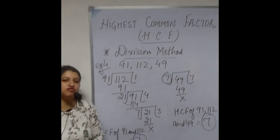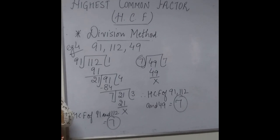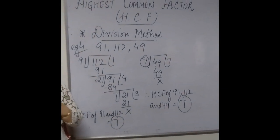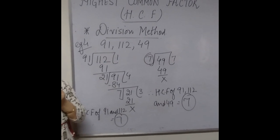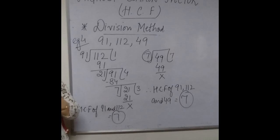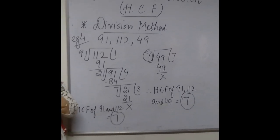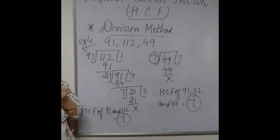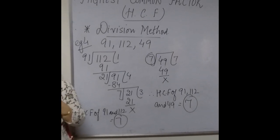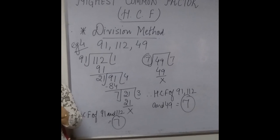You can use either of these two methods, whichever you find easy and comfortable. One more thing — there is another name for the Highest Common Factor. It is also known as the Greatest Common Divisor, or GCD, because factors are the exact divisors of a number. So the other name for HCF is GCD — the Greatest Common Divisor. Thank you and have a nice day.